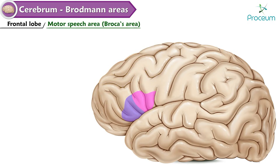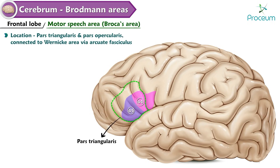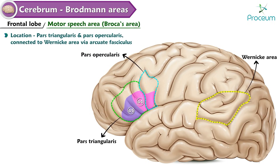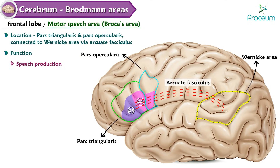Motor speech area, also known as Broca's area — Areas 44 and 45. Location: pars triangularis and pars opercularis, connected to Wernicke's area via the arcuate fasciculus. Function: speech production.